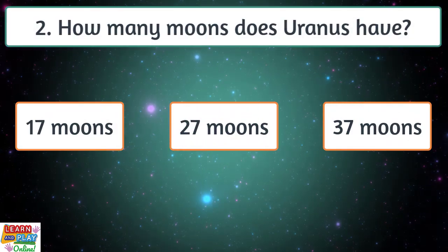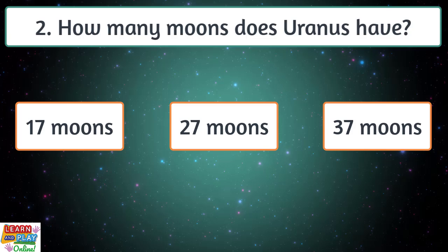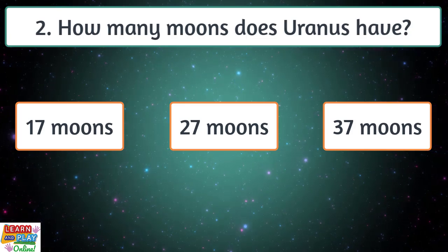Question 2. How many moons does Uranus have? 17 moons, 27 moons or 37 moons?